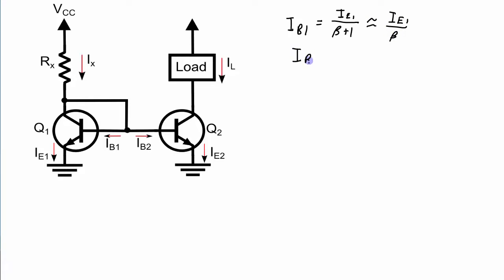Similarly, IB2 will be approximately IE2 over beta. From the nature of this circuit, we can see that the base emitter junction of Q1 will be equal to the base emitter junction of Q2. Now if these transistors have nearly identical characteristics, then because these two voltages are the same, the current IB1 will be equal to the current IB2, and let's just call that IB.